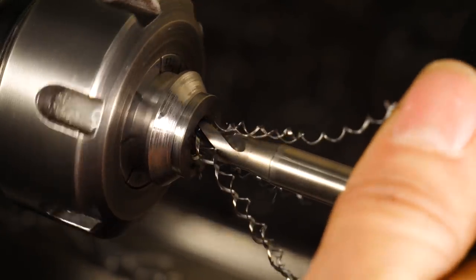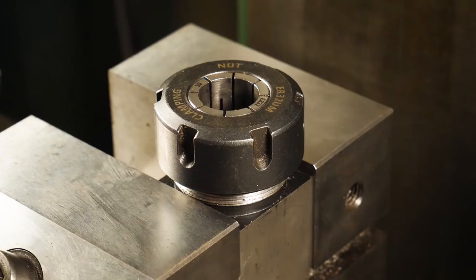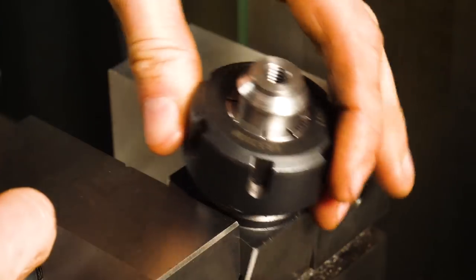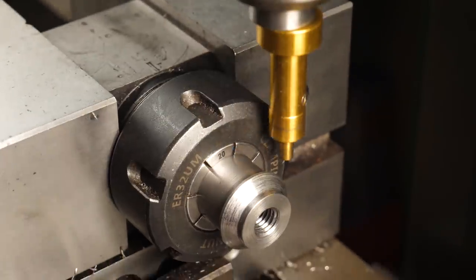That's the bottom. I'm going to be using a key and keyway in order to transmit torque to the cutter head. So I'll just pop this guy out a bit further and edge find on the shank.